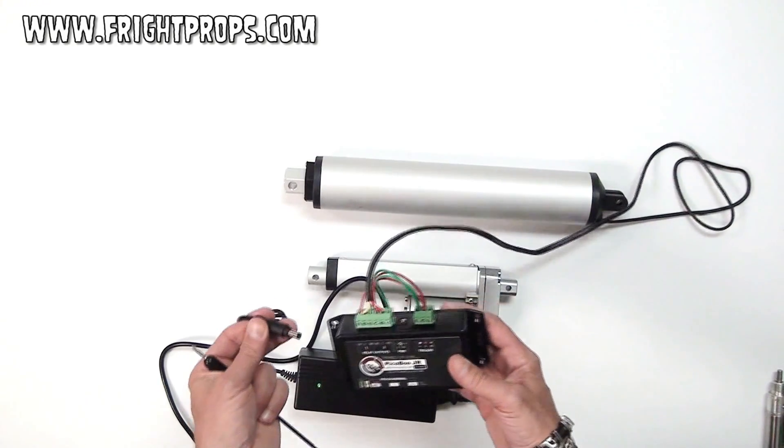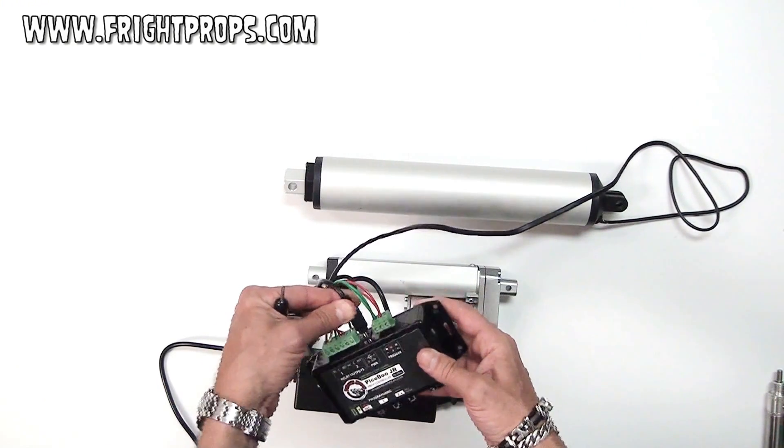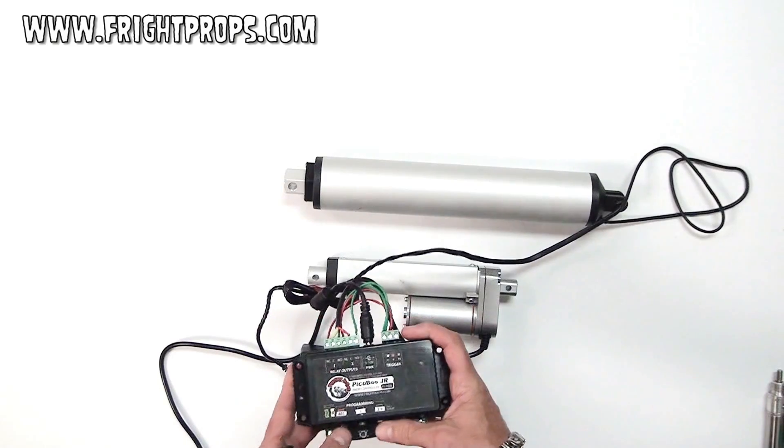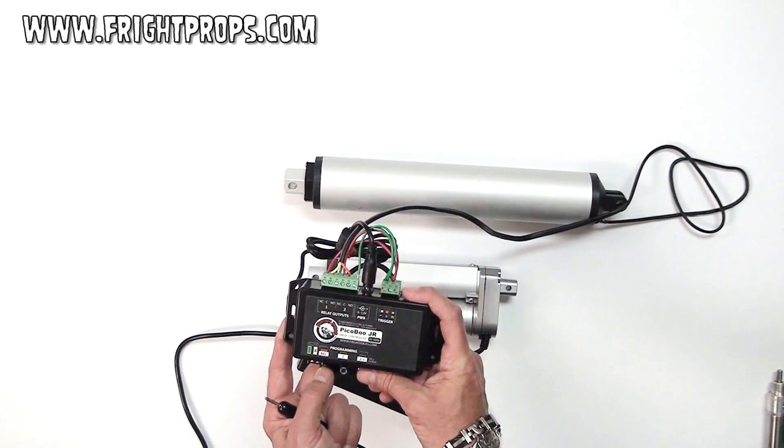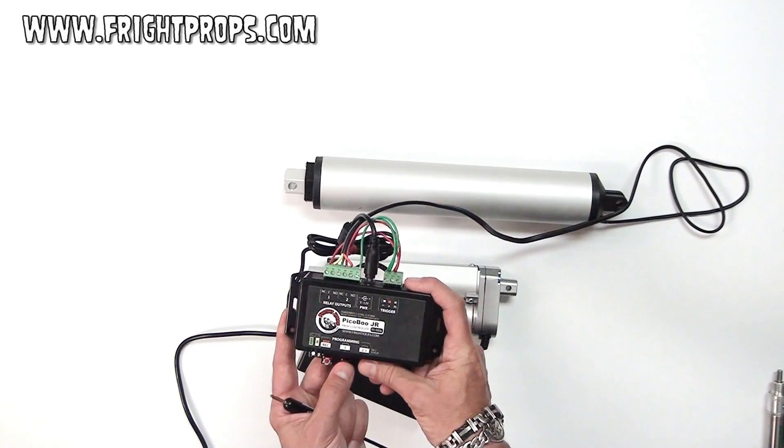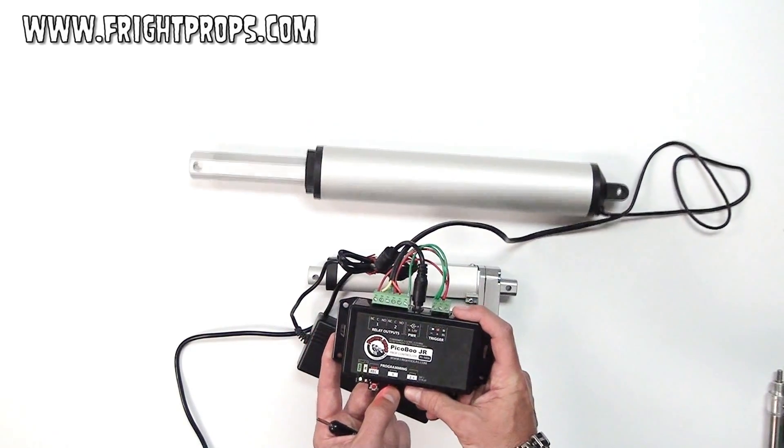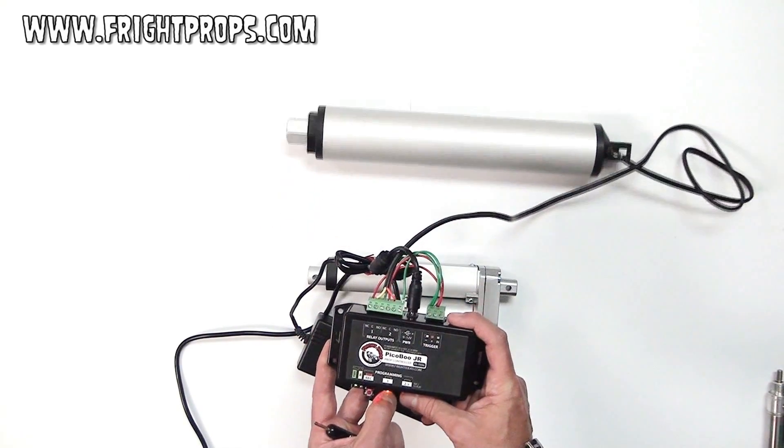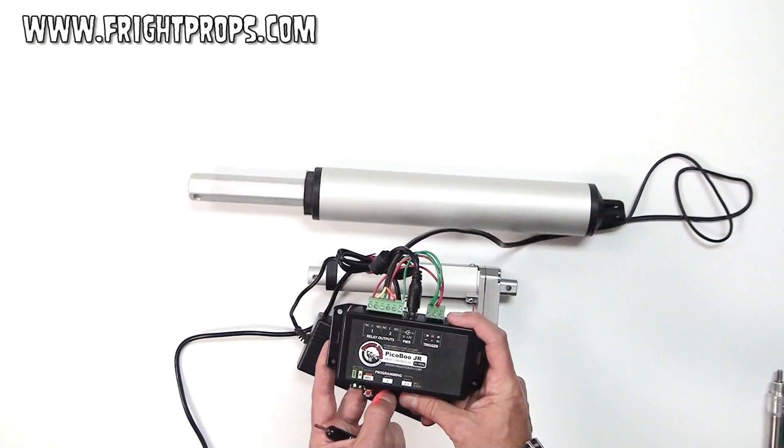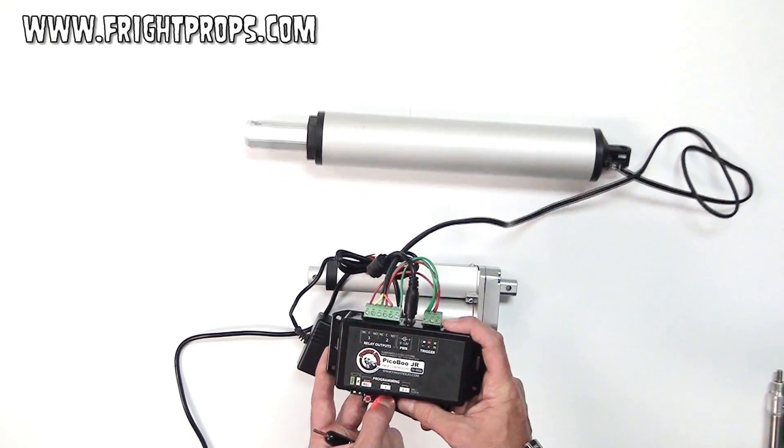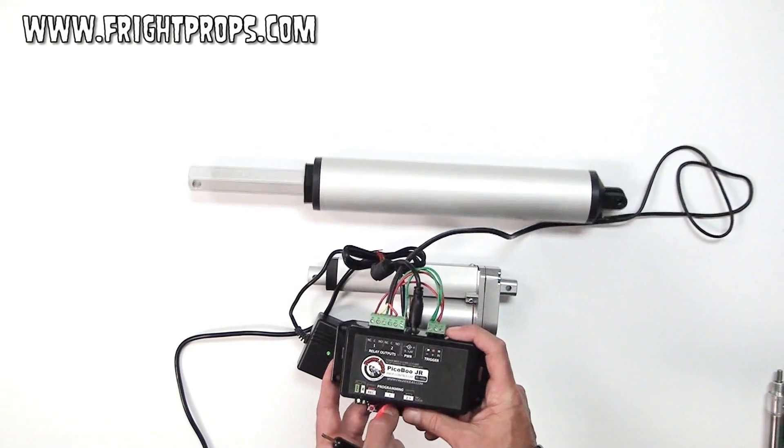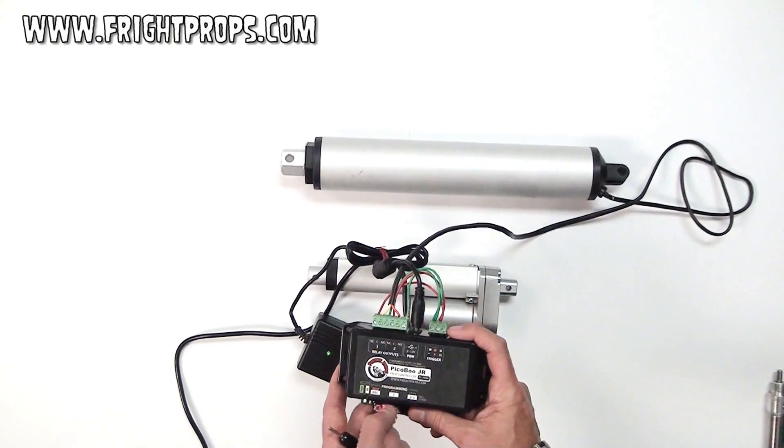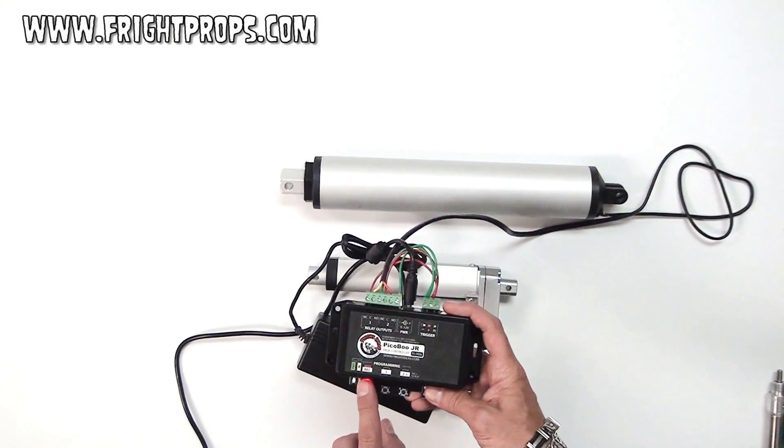I'm going to attach the twelve volt, ten amp power supply right up to the peekaboo that I've pre-wired. To program a sequence, it's a simple matter of tapping the record button, and then pressing the one button to move in one direction, and the two button to move in the other direction. You can tap the numbered buttons for different shaft movements. Press record when done to save your changes.